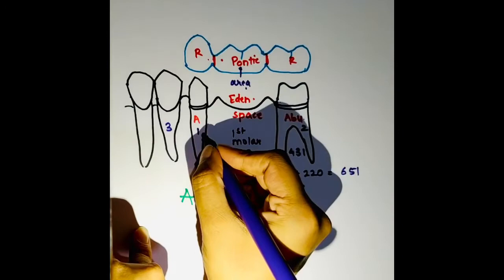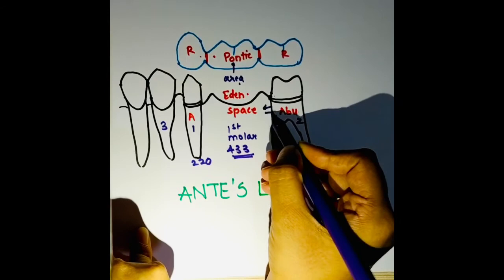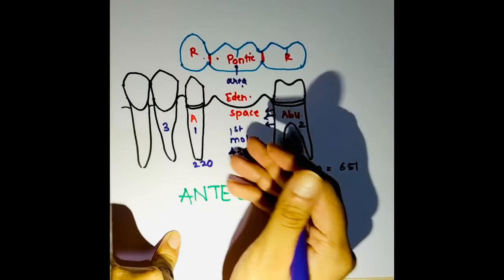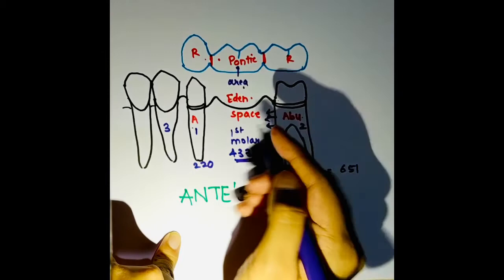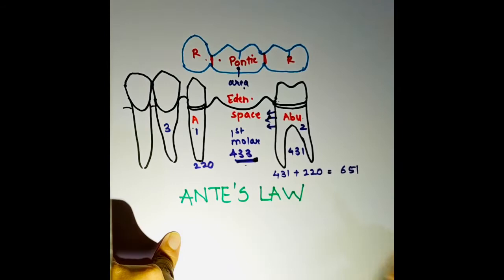Now, when do we need to decrease the number of abutments? This is applicable when your abutment is mesially shifted. In that case, we reduce the number of abutments — instead of using both abutments one and two, we may use only one of them — but it must still satisfy the periodontal area requirement of the tooth to be replaced.